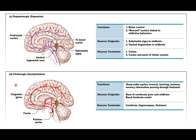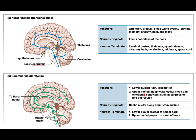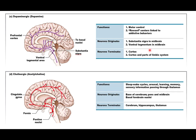The last behavioral state is the cholinergic, driven by acetylcholine. Its functions overlap with some of the others — sleep-wake cycles are found in serotonergic, noradrenergic, and cholinergic pathways. Functions also include arousal, learning, memory, and directing sensory information through the thalamus. These neurons originate in the base of the cerebrum, as well as in the pons and midbrain. They terminate in the hippocampus, thalamus, and throughout the rest of the cerebrum.